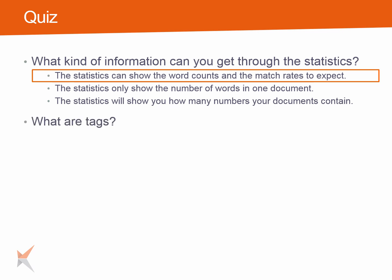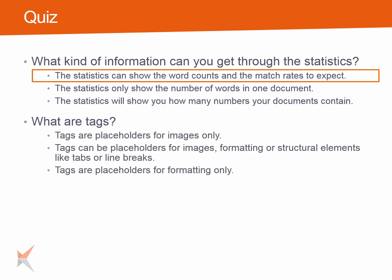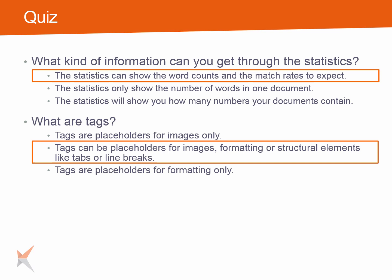Second question: What are tags? The possible answers are: Tags are placeholders for images only. Tags can be placeholders for images, formatting or structural elements like tabs or line breaks. Or, tags are placeholders for formatting only. The correct answer is: Tags can be placeholders for images, formatting or structural elements like tabs or line breaks.